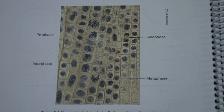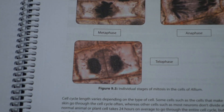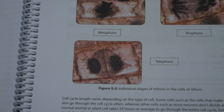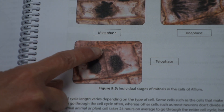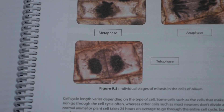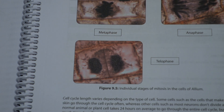Telophase represents the actual beginning formation of two nuclei on either side — in the onion cell, you have a cell plate forming. You can physically see the cell plate form here. The cell plate is the beginning of what will become two cell walls that form to separate these two cells.